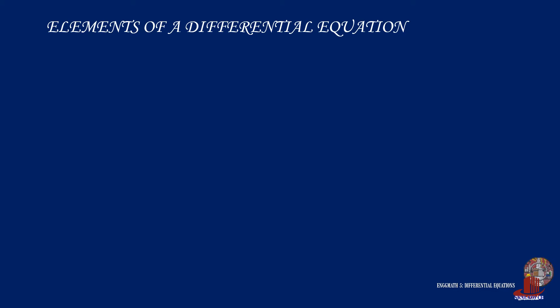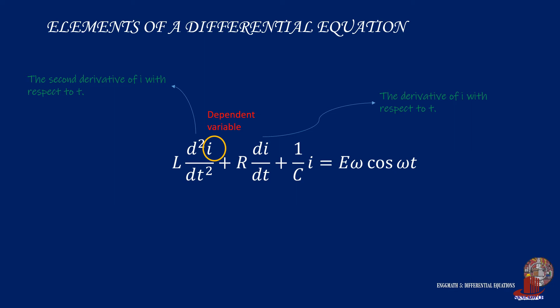Let's move further to the elements or parts of a differential equation. Say we have the equation L times the second derivative of i with respect to t plus R times the derivative of i with respect to t plus i over c is equal to e omega cosine of omega times t. As learned in your calculus, the first term is read as the second derivative of i with respect to t. The second term has the derivative of i with respect to t. Those variables which appear with respect to another are denoted as dependent variables. So i is a dependent variable, whereby t is the independent variable.